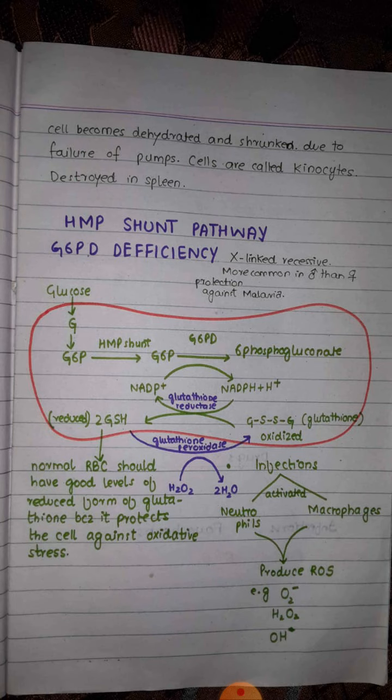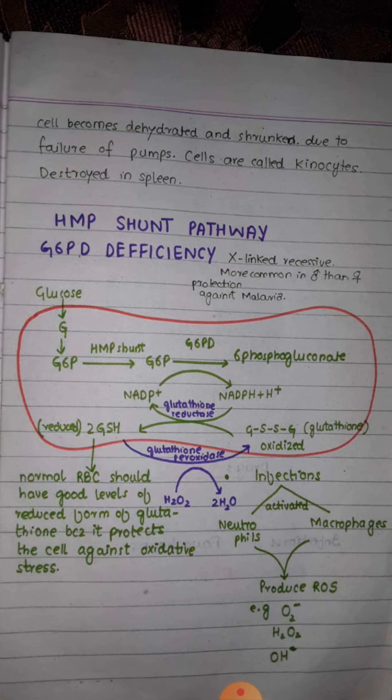It is more common in males compared to females. When a person suffers from glucose 6-phosphate dehydrogenase deficiency and hemolytic anemia, it provides some protection against malaria, because the shorter lifespan of red blood cells means merozoites of malaria do not get enough time to mature. This protection is especially relevant in malaria-prevalent areas such as the Mediterranean region and Africa.